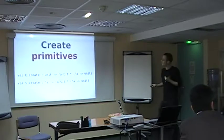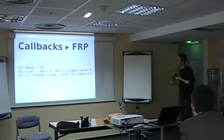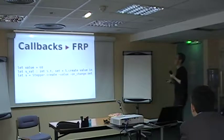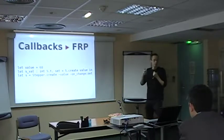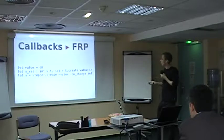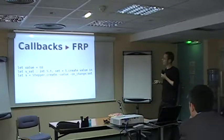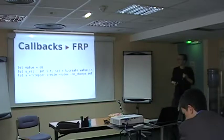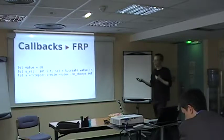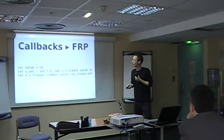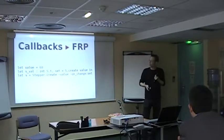So, for example, here, I want to show on the stepper widget how you would express its current value as a signal. So, basically, you would just create a signal here and use the set function as the callback to the stepper. And that way, whenever the stepper changes its value, it will be reflected in this s-val signal. It will automatically be up to date.